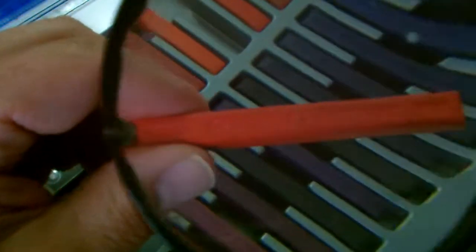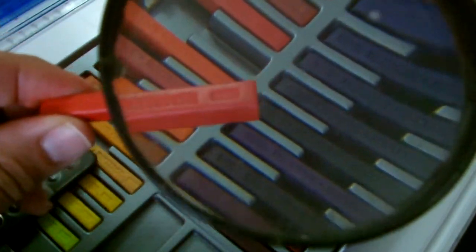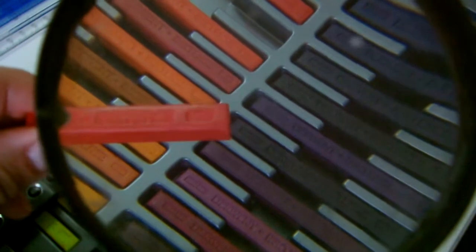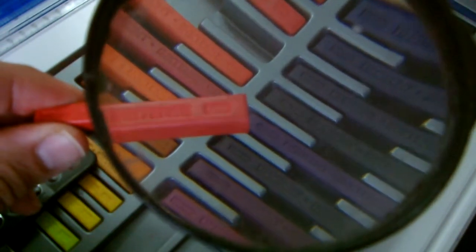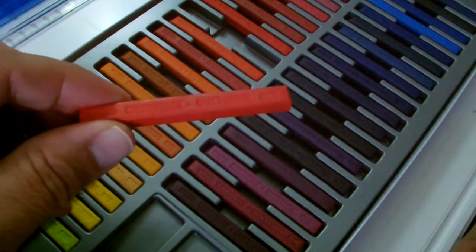And if we look close up we've got the details of each block. On the left it says England, then Derwent inktense and then it's got a number. That corresponds with the chart that I'm going to show you in a minute.